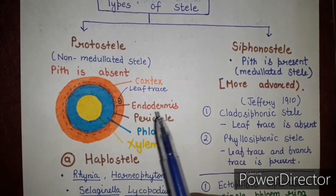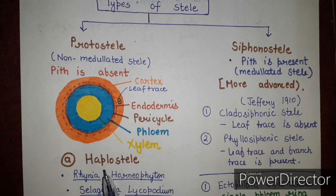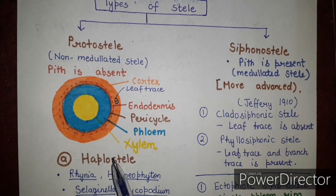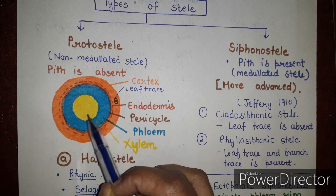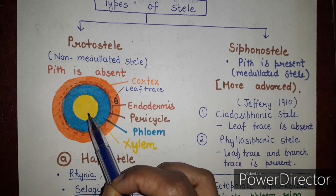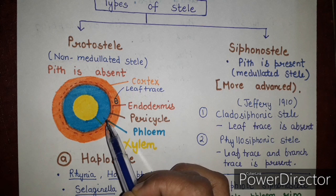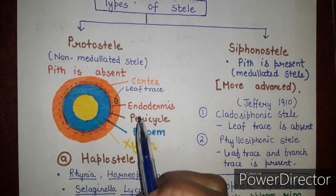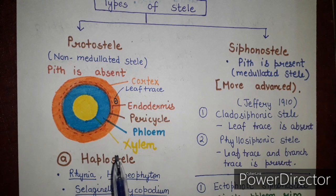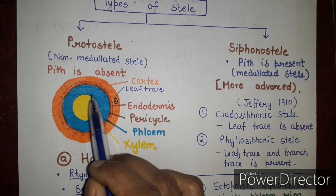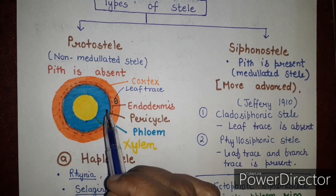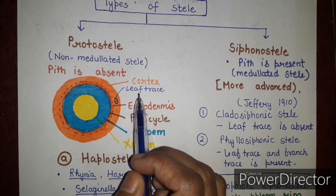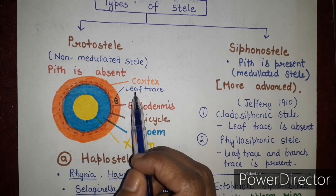The first type of protostele is the haplostele — the simplest form, in which xylem is present in the center as a circular core, surrounded by a layer of phloem. Then we have a layer of pericycle, followed by endodermis and cortex. Examples of haplostele include Rhynia and Horneophyton, which are fossil pteridophytes.